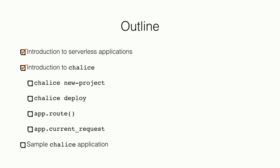That was a brief introduction to Chalice. Key points: to start a new project, run chalice new-project. To deploy or update changes, run chalice deploy and you can immediately start sending HTTP requests. The app.route decorator lets you run specific functions based on the HTTP request path or method. And the current_request property allows you to access the current request that triggered your function.